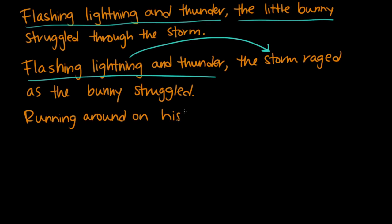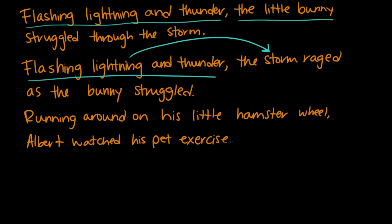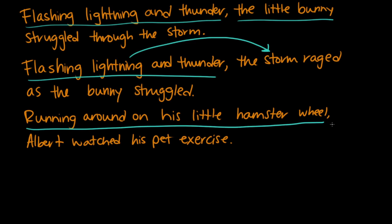Running around on his little hamster wheel, Albert watched his pet exercise. This whole part — running around on his little hamster wheel — is the modifier in this sentence, but what comes right after it is Albert, which I don't think he's the one running around on the little hamster wheel, right? So this is something you want to look out for and maybe rewrite your sentence so that doesn't happen. We have a clue that Albert is not the name of the hamster or the pet because it says Albert watched his pet exercise, so Albert is probably a human and he's probably not running on a hamster wheel, so he shouldn't be coming right after that modifier.